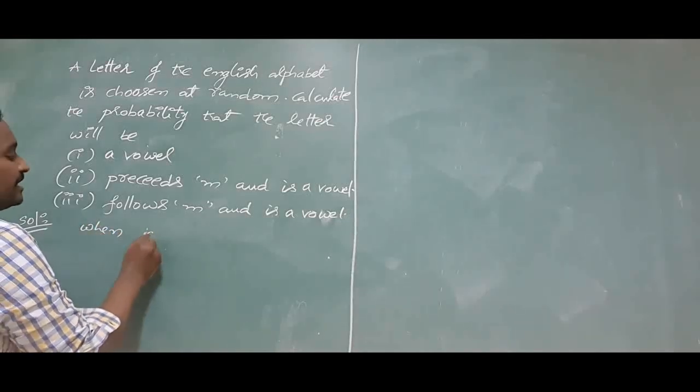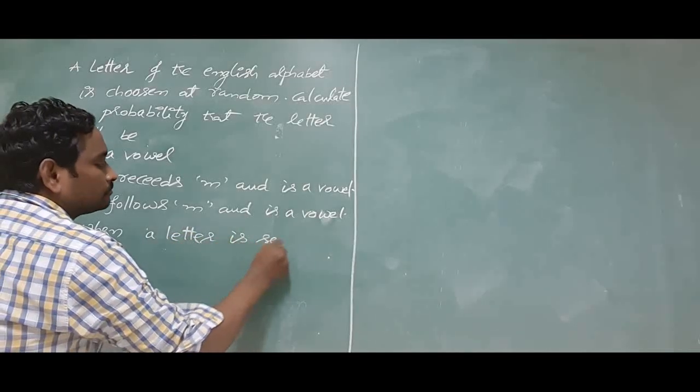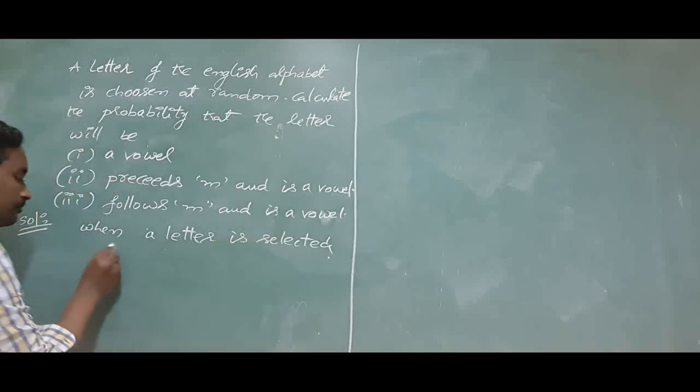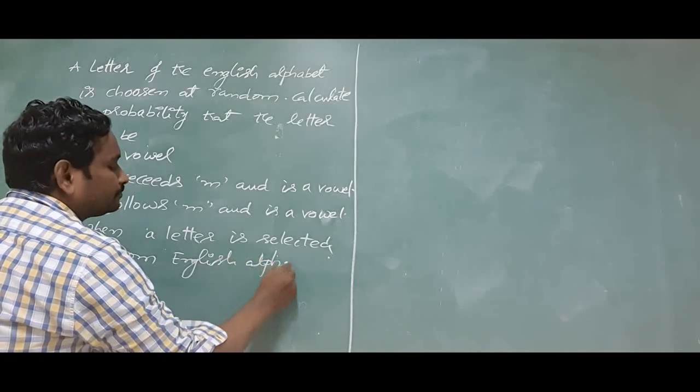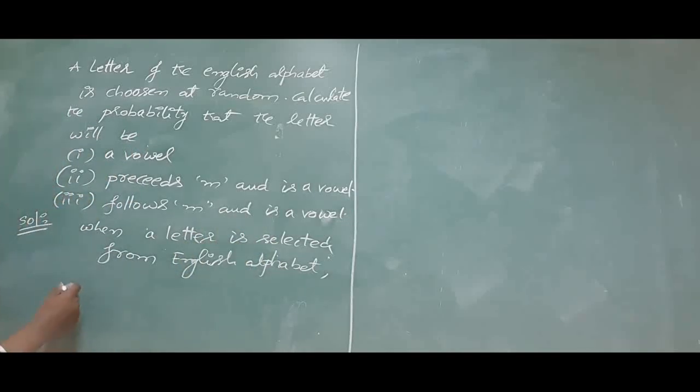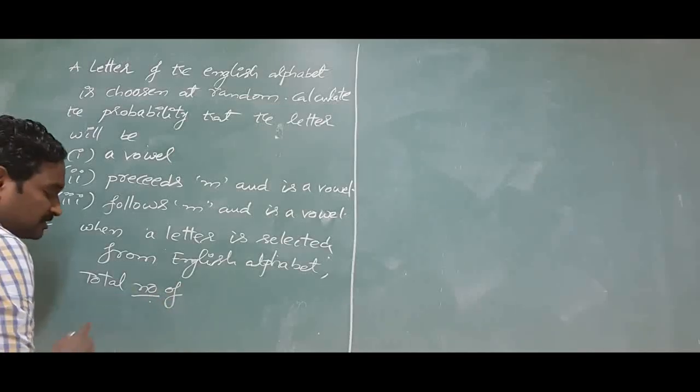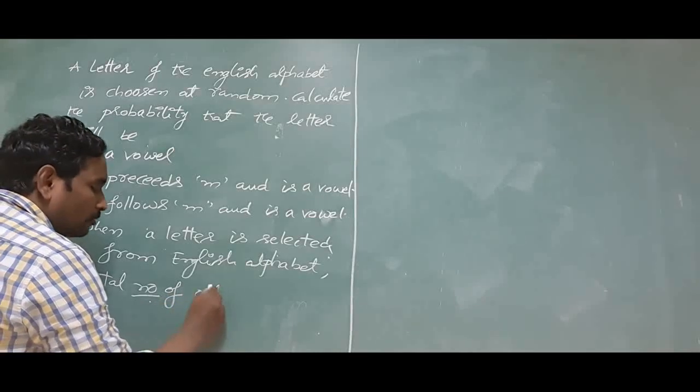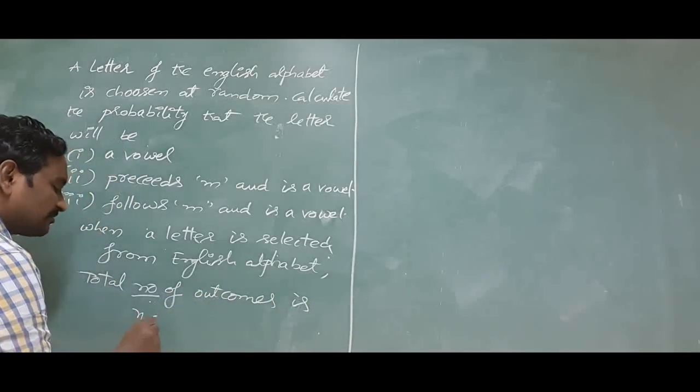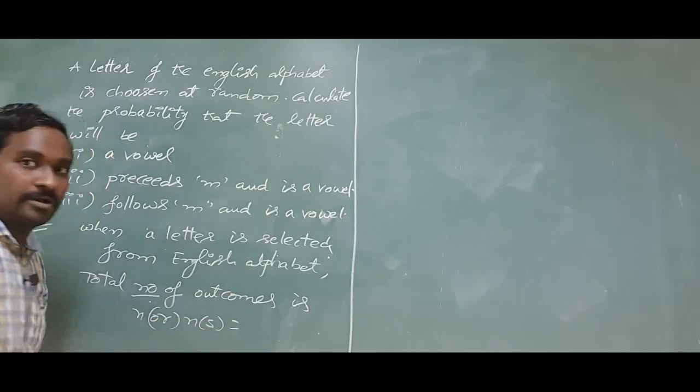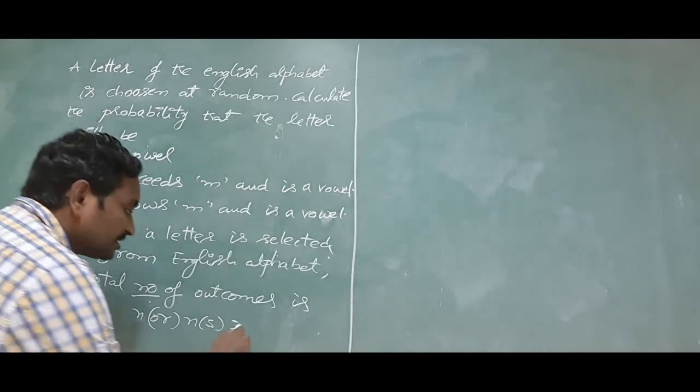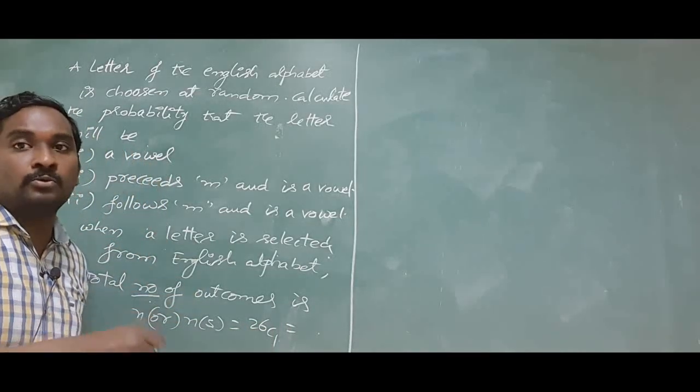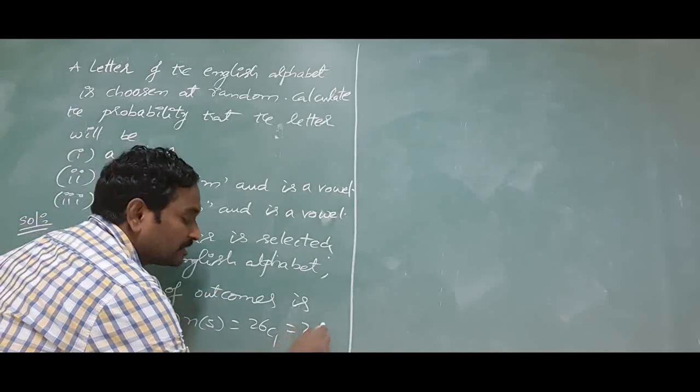When a letter is selected from English alphabet, what is the total number of outcomes? This is also known as exhaustive number of events. Total number of outcomes is N otherwise N of S. You may have the chance any letter from A to Z. That is why you will get 26 C 1.